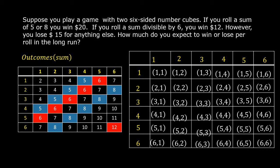In this table, the numbers in the first row are the numbers in the first number cube: 1, 2, 3, 4, 5, 6. The numbers in the first column are the numbers in the second number cube: 1, 2, 3, 4, 5, 6.